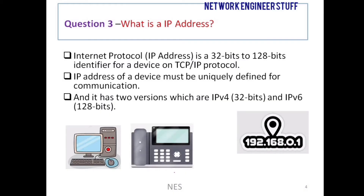Question number three: what is an IP address? An IP address is basically the address of a device — it is the identity of that device, and this identity is required for communication. Just like your residential address is needed for someone to send you a letter, an IP address is required for IP communication and is assigned to a device.